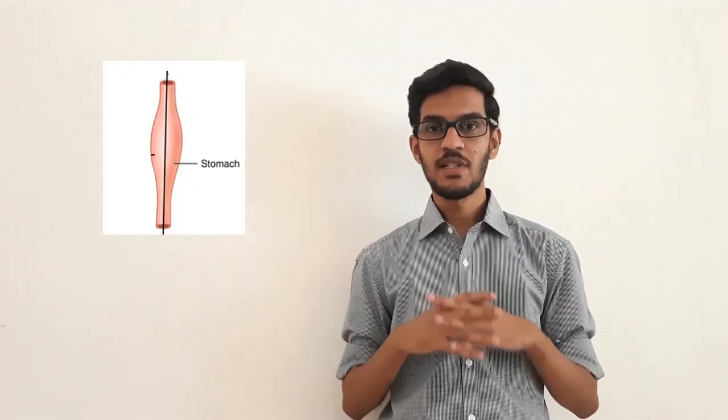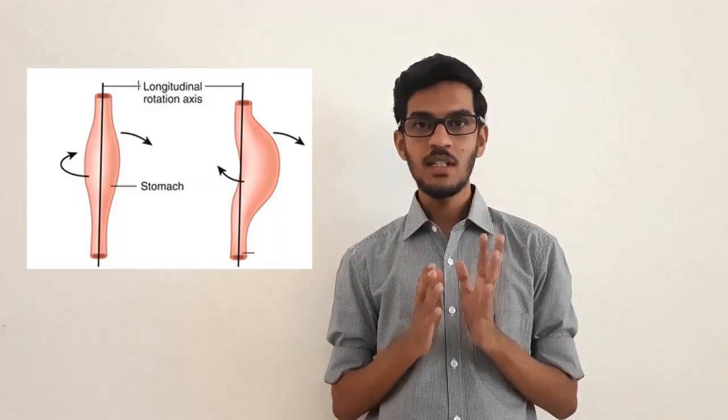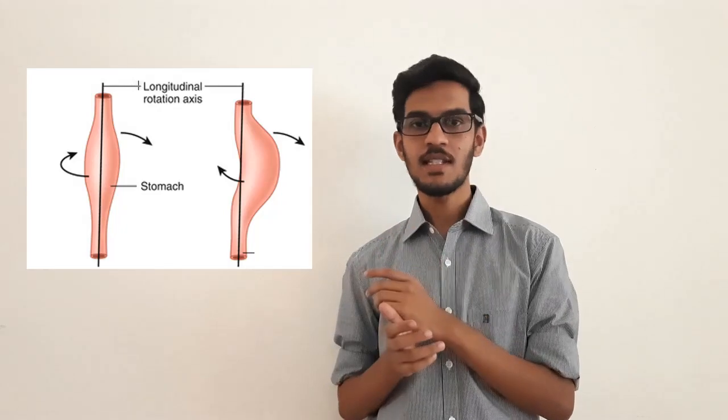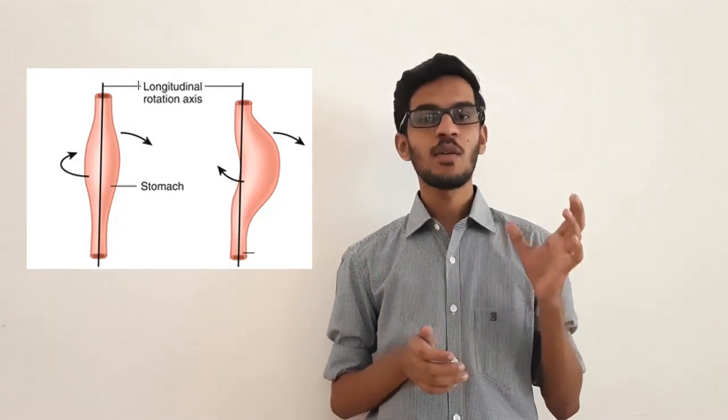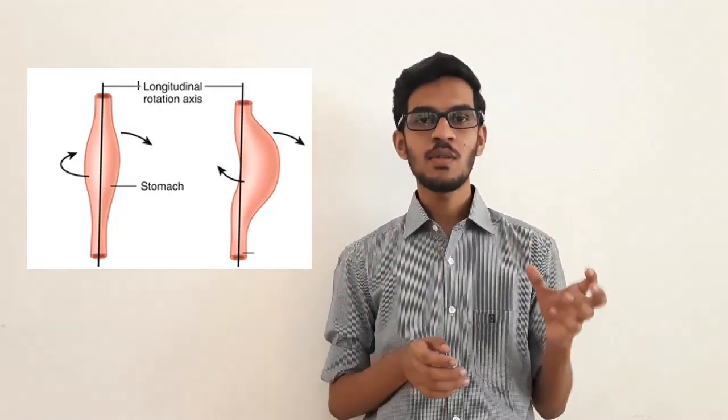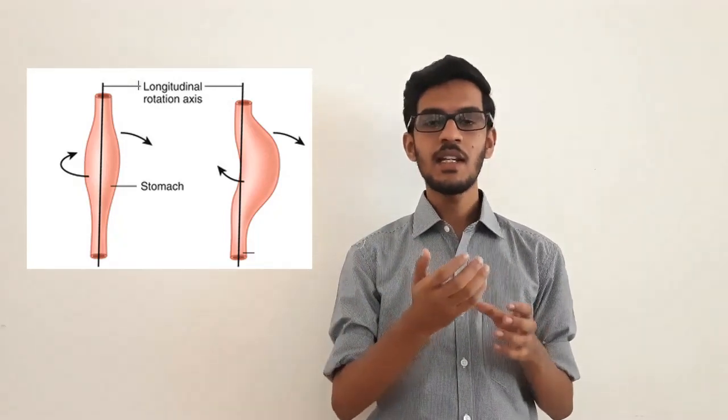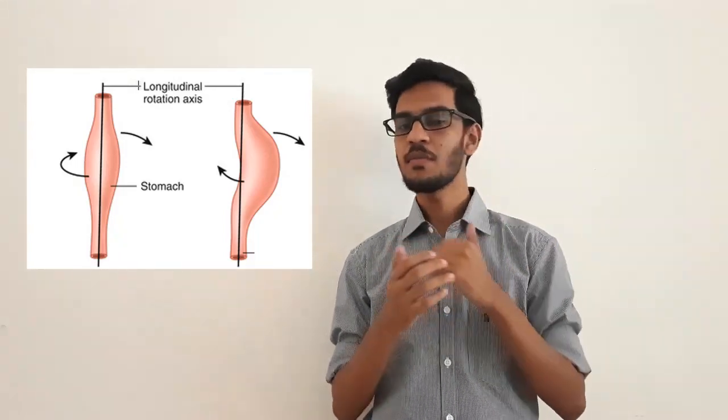Development of stomach. The stomach develops as a fusiform dilatation from the foregut. It undergoes two rotations. The first rotation occurs 90 degrees on a longitudinal axis in clockwise direction. Because of this rotation, the left side becomes anterior and the right side becomes posterior. Vagal trunks also follow the above rotation.